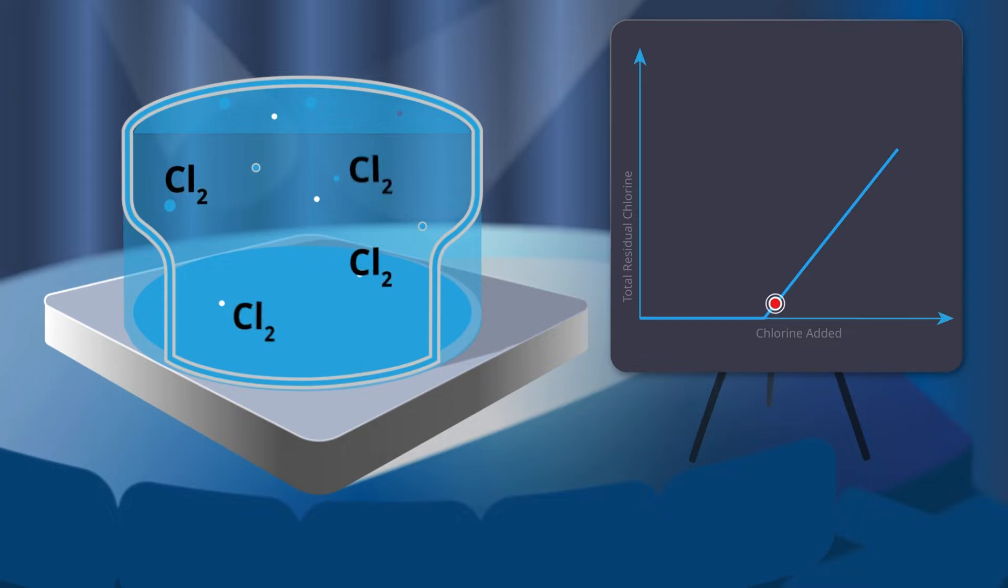Eventually, the added chlorine has exceeded the demand, and we measure more chlorine that now forms a residual, as is indicated by the graph in the upper right-hand corner of your screen.